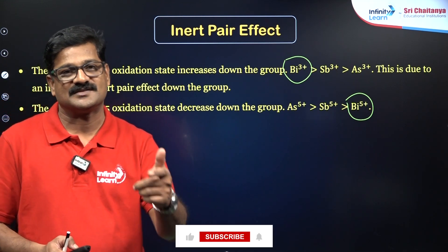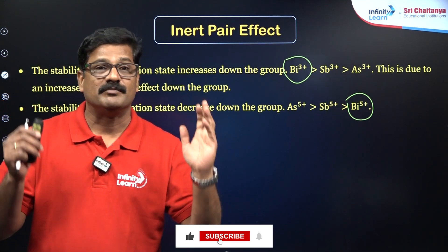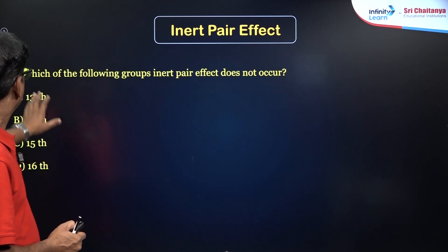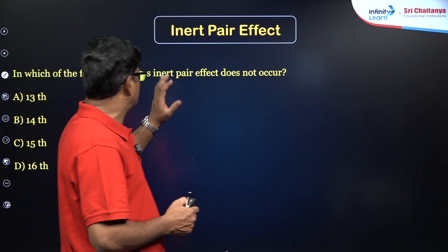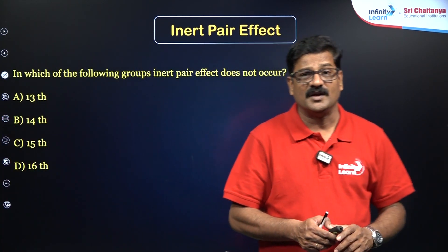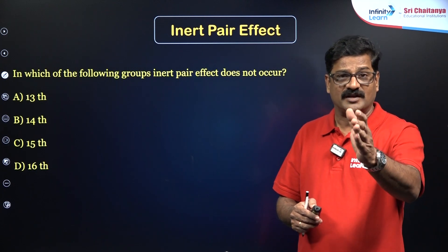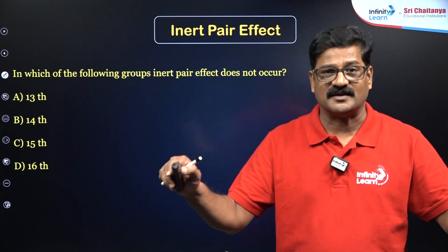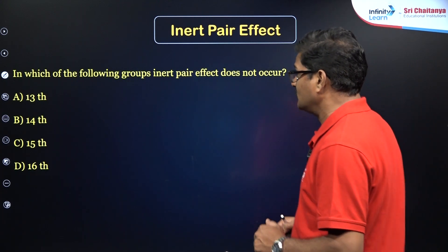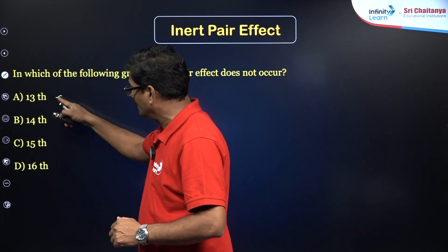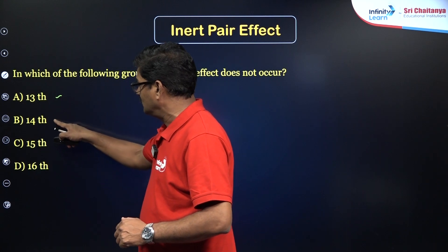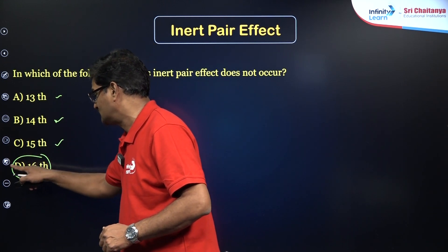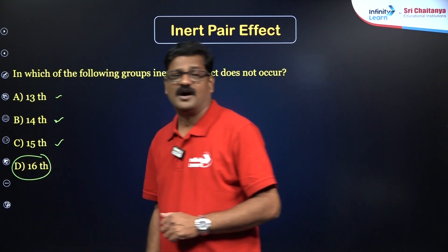Logic-oriented questions based on inert pair effect appear in NEET. For example: 'In which of the following groups is the inert pair effect not seen?' In the P-block, the inert pair effect is seen at the last elements of groups 13, 14, 15, and 16 — nowhere else in the periodic table. So the answer for this question is option D.